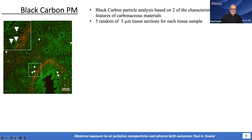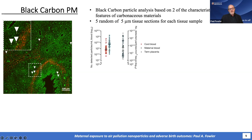In both tissue and blood, we counted black carbon particles. It was a postdoc called Eva Bongaerts who did this very dedicated and meticulous work. You can see in the tissue sections some particles highlighted with white arrows. It's important to discriminate between the particles and other features in the tissue, and a lot of work went into making this reliable.